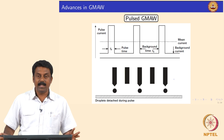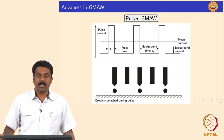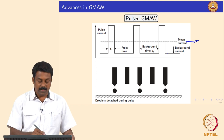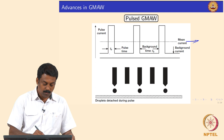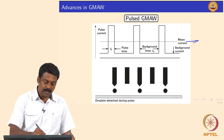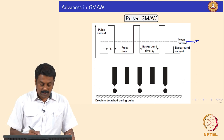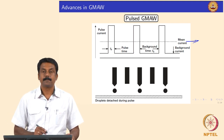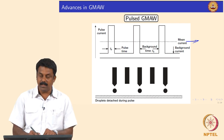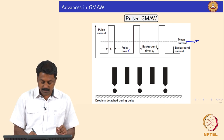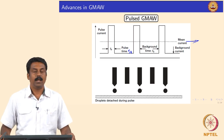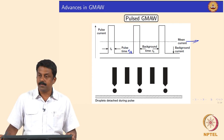For pulse GMAW, instead of using a constant current, we do a pulsing current. During the pulsing period TP, we make sure one droplet detaches from the electrode by subjecting it to a much higher peak current IP. We then maintain a background current IB to keep a very small arc stable, otherwise we would need high-frequency ignition. We then do another pulsing to achieve subsequent droplet transfers.